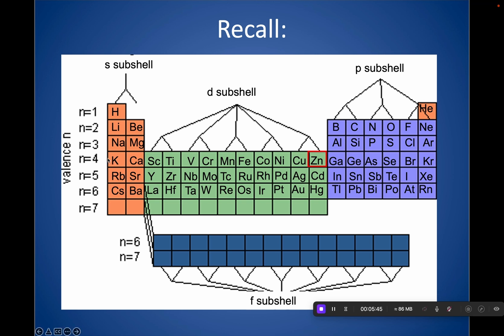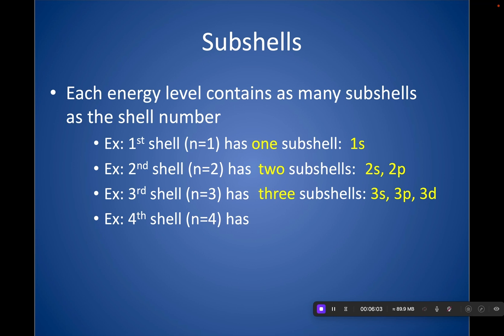And the fourth shell holds 4S, 4P, further down, we have the 4D, and then don't forget, in this sixth row, after filling 6S, we go and fill 4F. So the fourth shell actually has 4S, 4P, 4D, and 4F, so those are four subshells. So notice they have as many subshells as there are shells.